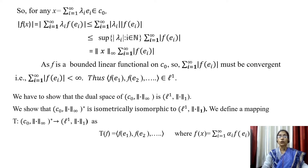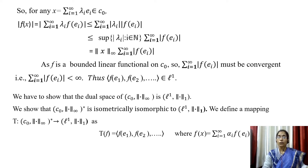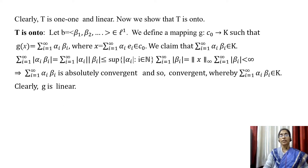We now show that the dual space of C₀ is L¹ by showing they are isometrically isomorphic. We define a mapping T from C₀* to L¹ by T(f) = (f(e₁), f(e₂), ...), where f(x) = Σᵢ₌₁^∞ αᵢ f(eᵢ). Since (f(e₁), f(e₂), ...) belongs to L¹, this mapping is well defined. It can be shown that T is one-to-one and linear.